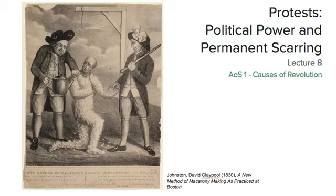Today we're going to look at protests, political power, and permanent scarring. These three themes come up quite a lot following the Stamp Act crisis that we've covered already. We're going to be specifically looking at what's called the Declaratory Act and the Townshend Duties. Throughout the introduction of these acts, there is significant protest on both the American and British sides, a question over political power, and the Americans permanently scar the British through the act of tarring and feathering.